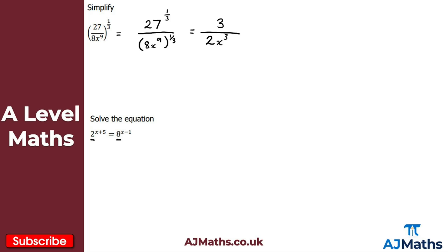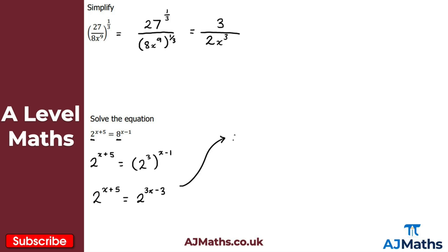We can express 8 as a power of 2: that's 2 cubed. So we have 2 to the power of x plus 5 equals 2 cubed, raised to the power of x minus 1. By the laws of indices — a power raised to another power means we multiply the powers — this gives us 2 to the power of x plus 5 equals 2 to the power of 3x minus 3. Because the base is the same and they're equal in value, the powers must be the same: x plus 5 equals 3x minus 3.